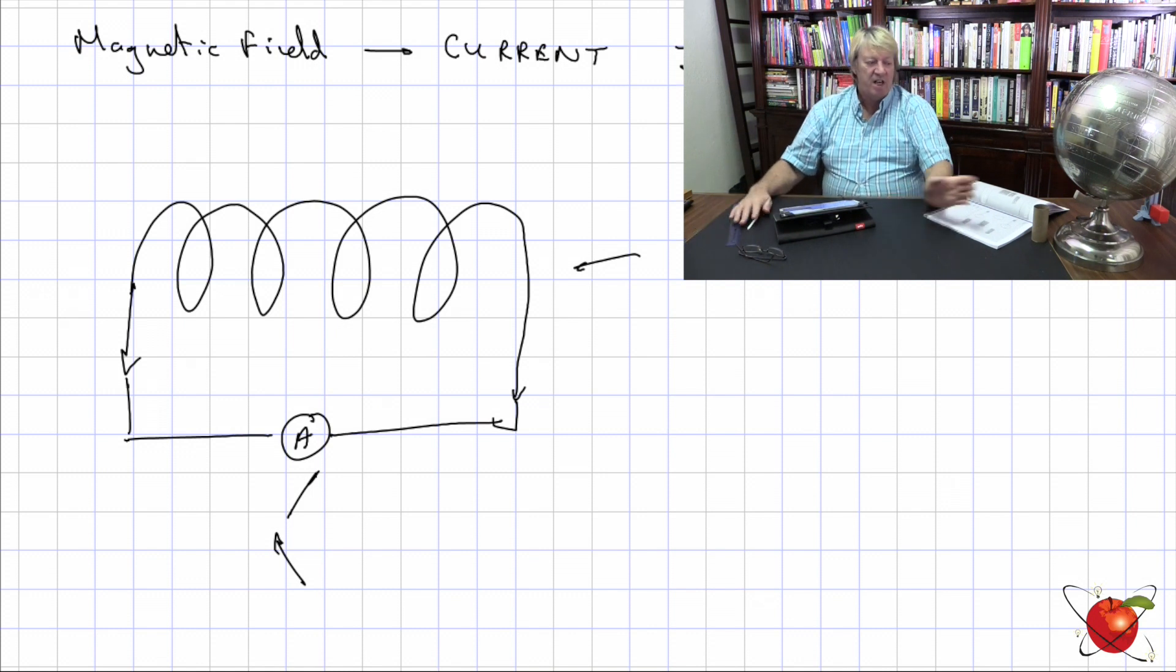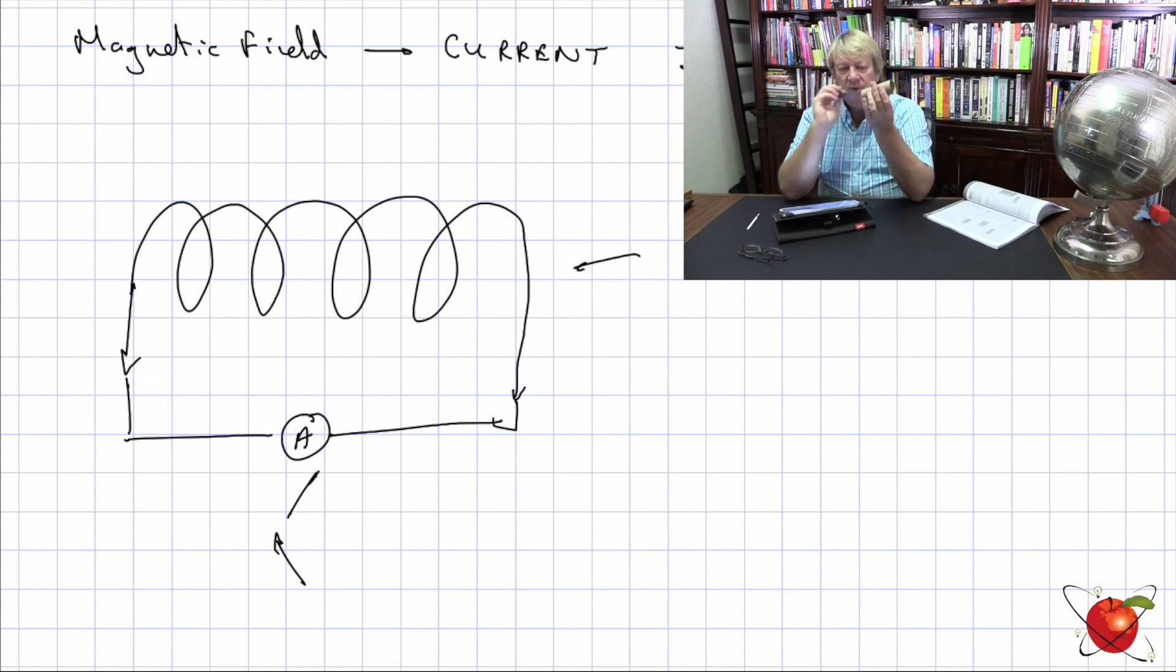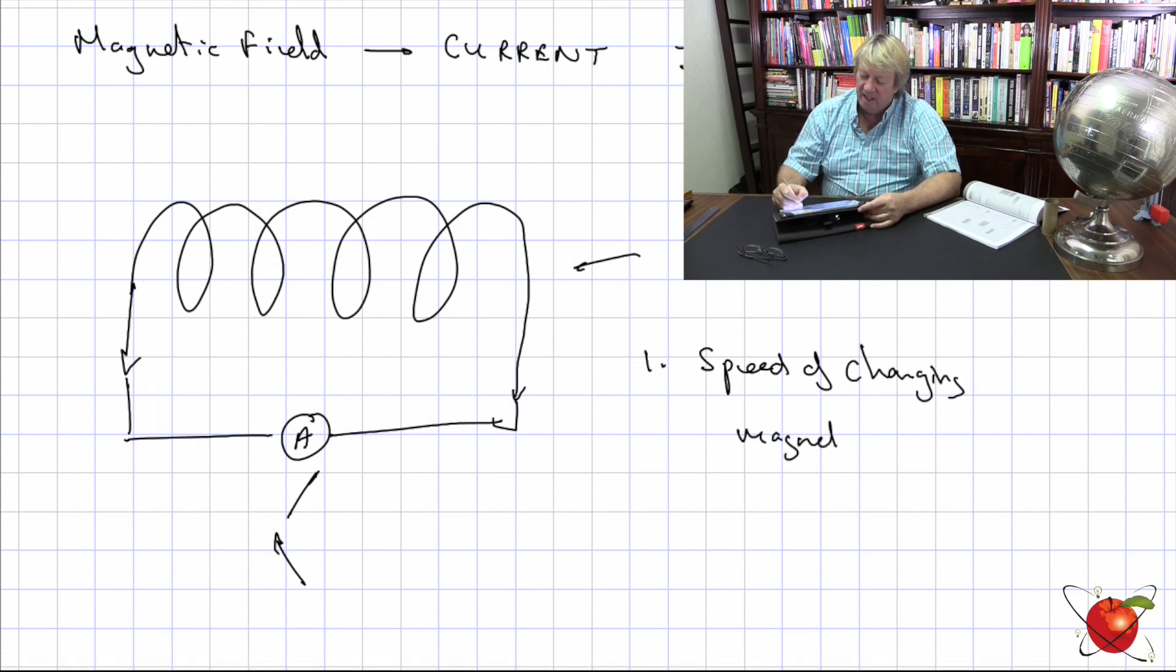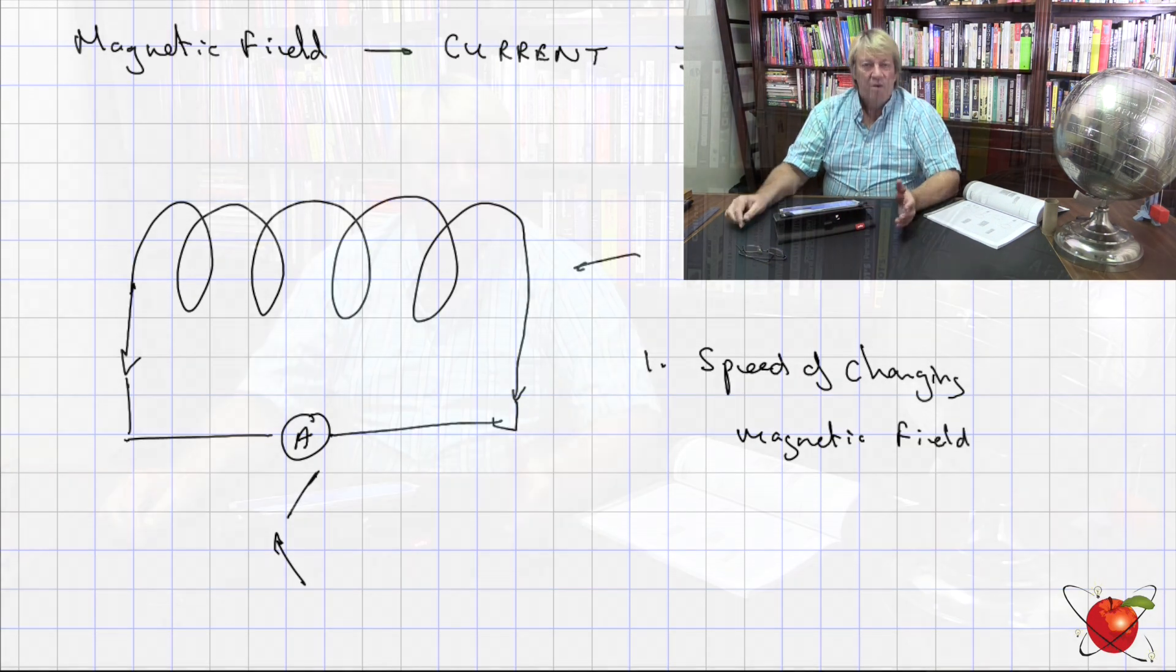So, a changing magnetic field results in a current. The question is now, what else happens? Well, the faster the magnet approaches and cuts the conducting wires here, the greater the current. So, there's a couple of little things that come out of this. The first of all is, let's say, speed of changing magnetic field. What does that actually mean if we try and visualize it? It's saying, we've got a wire, and there's a magnet here. It's the speed at which this is cutting through those magnetic lines.